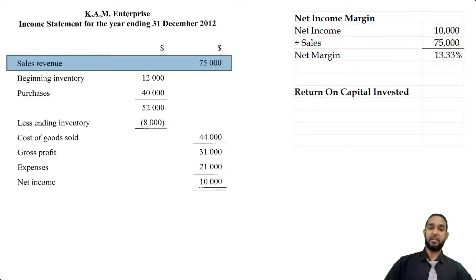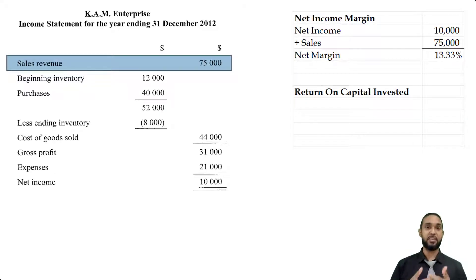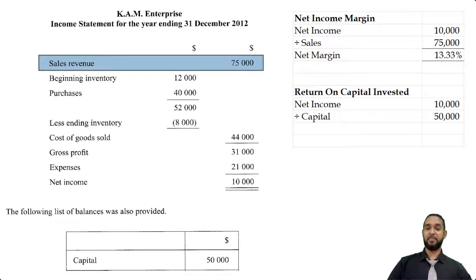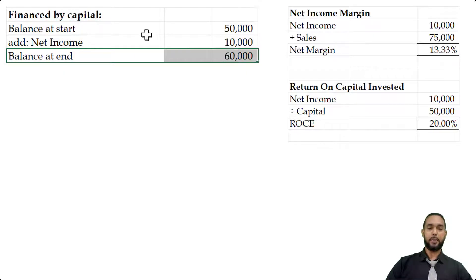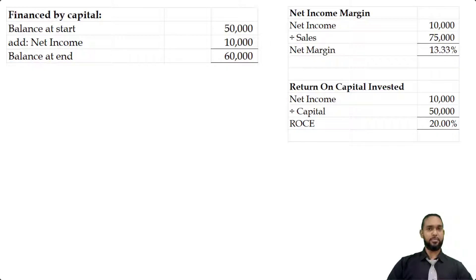The next item is return on capital invested — how much you earn as the owner on your capital investment. Basically what you earn is your net profit, expressed as a percentage of your capital. The same net profit of 10,000 applies as our numerator, and the capital invested was 50,000, giving us a nice round figure of 20%. Some people prefer to use average capital: opening plus closing divided by two, which gives 55,000 and the ratio would fall to 18.18%. I prefer to use opening capital here.